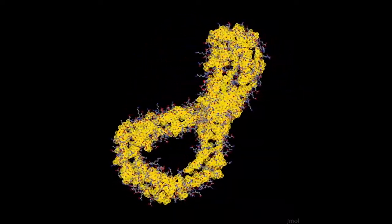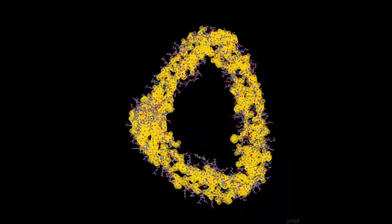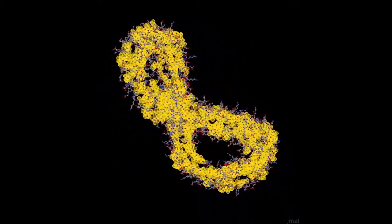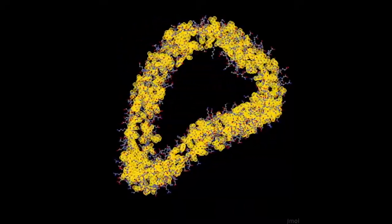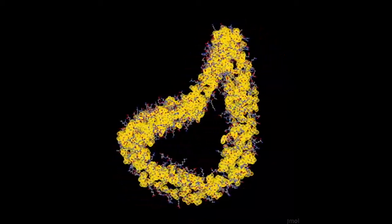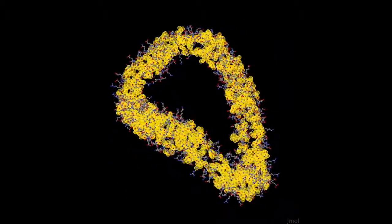When bound to a lipid, a band of hydrophobic residues form a belt-like structure around the lipid. However, when not bound, aromatic residues such as phenylalanine and tryptophan stabilize the structure through the phenomenon known as aromatic packing.